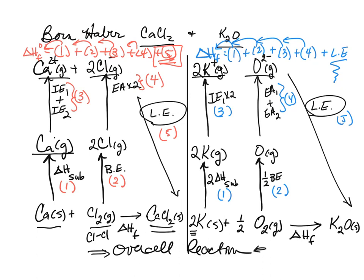Hopefully this video helps you trace all those different energies so you'll know: do I double it or am I adding energies together? Am I keeping the bond energy or halving it? Is it just the heat of sublimation or two times the heat of sublimation? The key is to write each reaction correctly and keep it balanced all the way through.